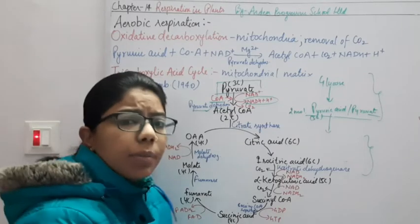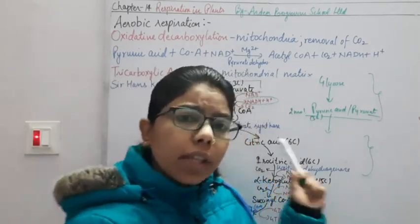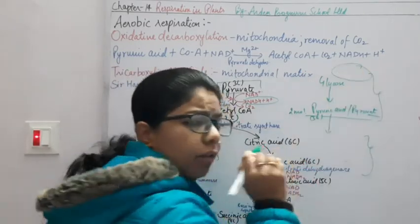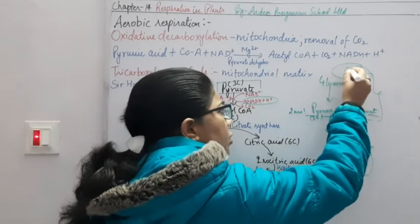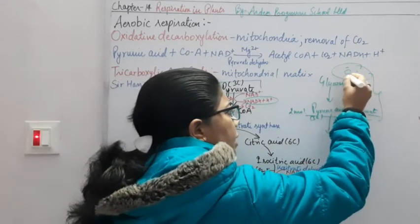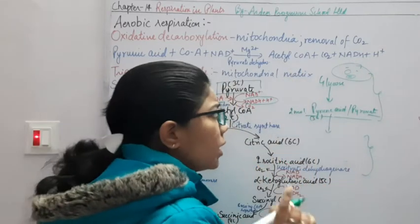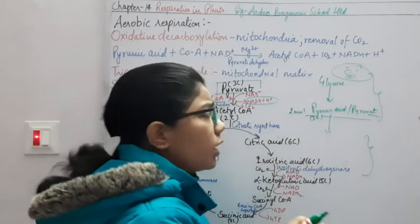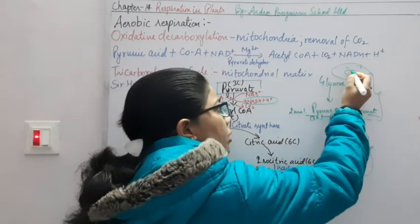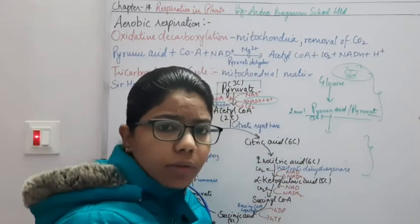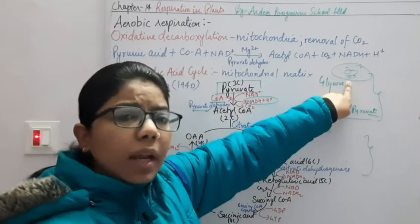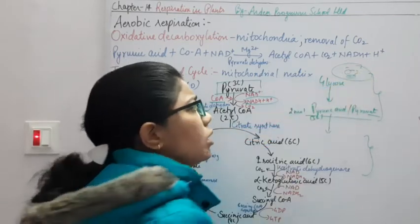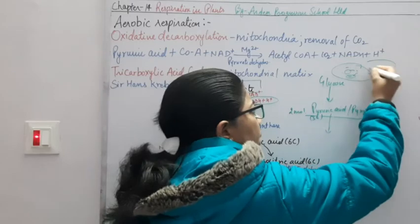Glycolysis takes place in the cytoplasm. Inside a cell, cytoplasm, nucleus, and different cell organelles are present. When glycolysis is complete, the product will enter into the mitochondria, which is one of the cell organelles of a plant cell. So with the partial breakdown product, it enters into the mitochondria.